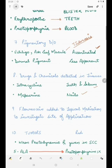There are certain drugs and chemicals that can be detected in the tissues. For example, tetracycline in teeth and sebum, and mepacrine in nails. We add fluorescein to certain topical medications to investigate the site of application. If we suspect a patient has not been using his medication, we'll add fluorescein to the topical medication and then investigate the site of application. If he's applied the medication, there will be fluorescence.